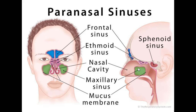The frontal sinus is also drained by the submandibular nodes. To recap: the frontal sinus is rudimentary at birth, it drains into the middle meatus, it's supplied by the supra-orbital artery and nerve, and it's drained by the submandibular lymph nodes. That's the frontal sinus. Let's move on to the maxillary sinus.